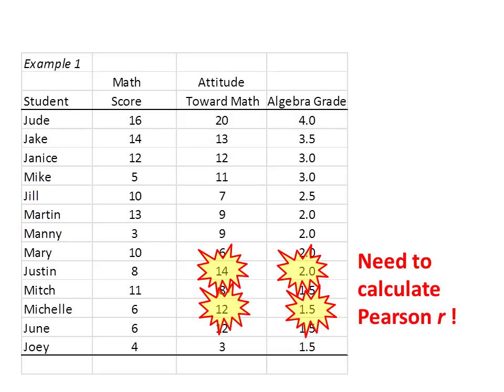If we look at all of the grades and all of the attitude toward math scores in example 1, we also see that the relationship is not perfect. For example, Justin has a high attitude toward math score but only a 2.0 in algebra. And Michelle has a relatively high attitude toward math of 12 but a grade of only 1.5 in algebra. With these exceptions, we need to calculate our Pearson R to get a precise description of the degree of correlation.